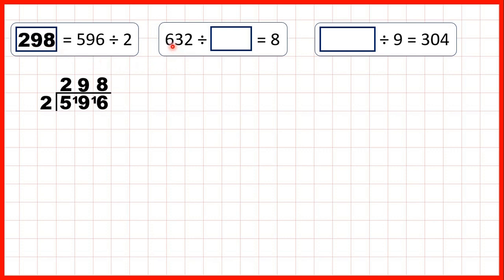Now, 632 divided by something equals 8. Well, here it's the second number or the divisor that's missing, and when the second number in a division problem is missing, we still need to use division to find our missing number. So, we need to divide 632 by 8.